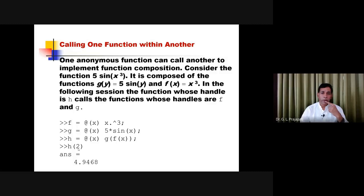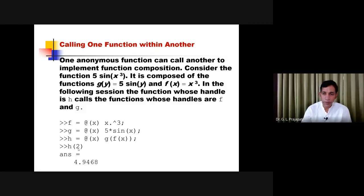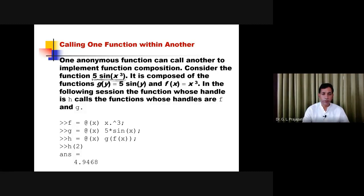An anonymous function can call another anonymous function to implement function compositions. For example, to compute 5*sin(x³): first define f = @(x) x.^3, which computes x cubed. Then define g = @(x) 5*sin(x), which computes 5 times sin of x. The target is to compute 5*sin(x³), so we decompose the problem into these two anonymous functions.